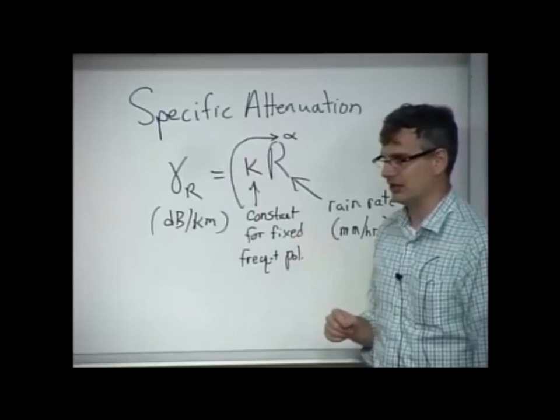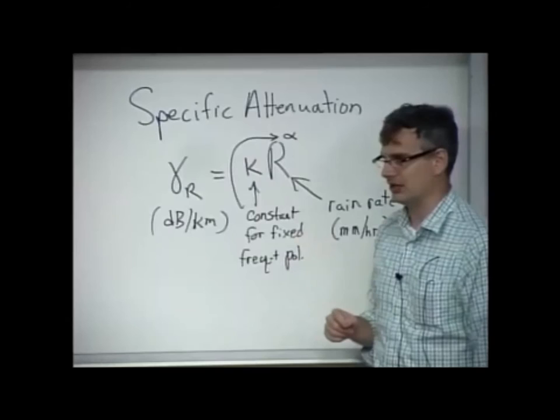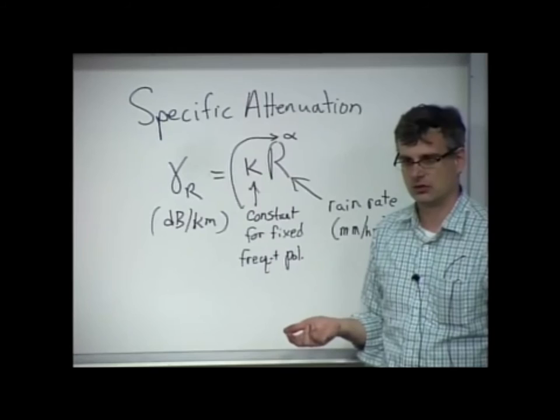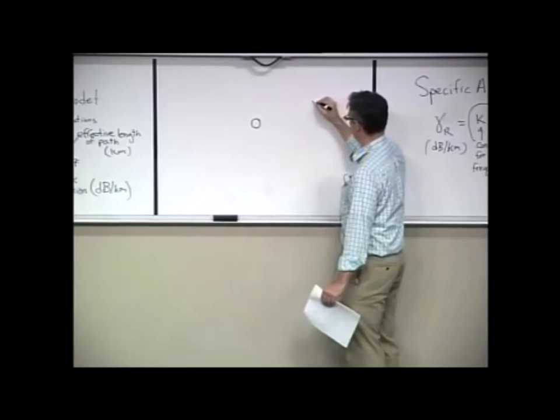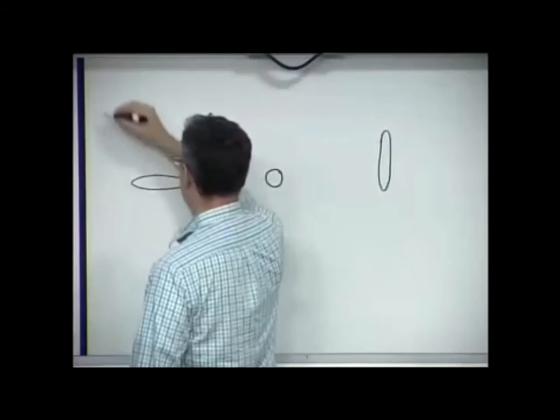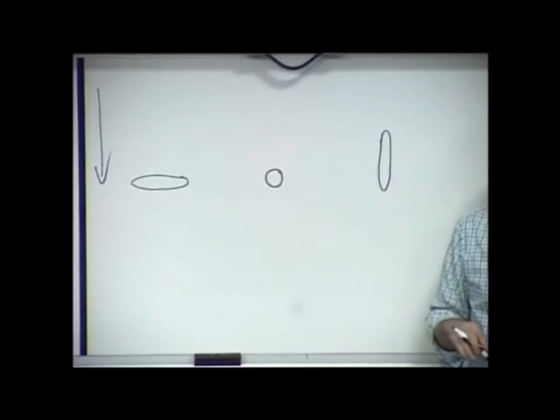Well, notice I put for fixed frequency and polarization. Why does polarization play a role in this? Well, the reason is raindrops. Let's do a little quick experiment. I'm going to do a little poll in the class. Here's a circular raindrop. Here's an ellipsoidal raindrop. And here's another ellipsoidal raindrop. So if this is down, which of these shapes best represents a raindrop? Let's get a show of hands. How many think it's a circle?